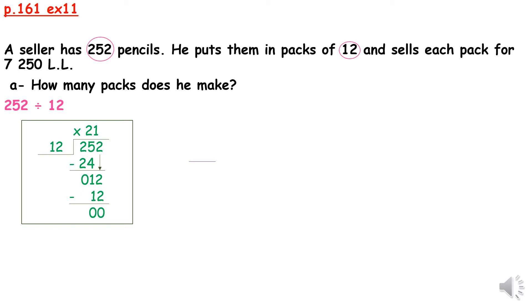We should take two digits from the dividend since we have two digits in the divisor. We say 25 divided by 12. How many 12 does it contain? We should try by 2. 2 times 12 is equal to 24. Now 25 minus 24 is 1. We bring down the 2.